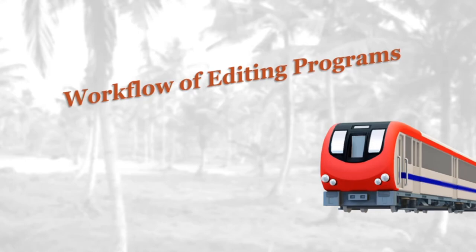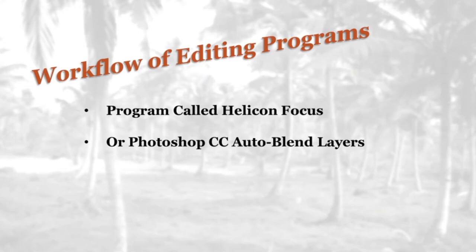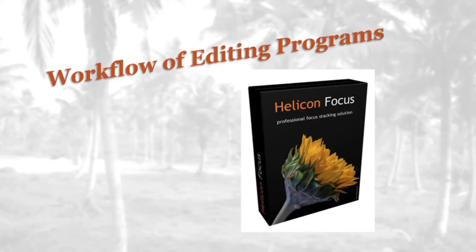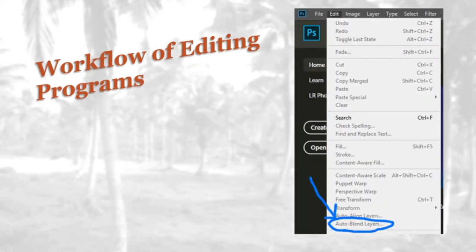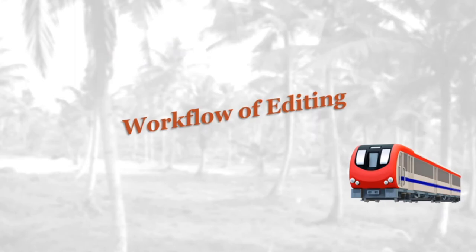There are a couple of programs to help Photoshop Elements. One is called Helicon Focus, which sharpens the depth of field from foreground to background. Another is Photoshop CC, which has what they call Auto Blend Layers — something Photoshop Elements does not have. Photoshop CC works in the cloud, and you'll notice in the upper left corner it has the letters 'PS' instead of 'Elements' — that's how you know which version you have and how to look for the Blend Layers feature. Now let's go into editing.